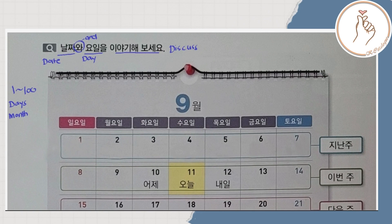For today's lesson, it's just a continuation of our previous lesson. Quick review: last time, we studied 1 to 100, and also the days of the week and months of the year.